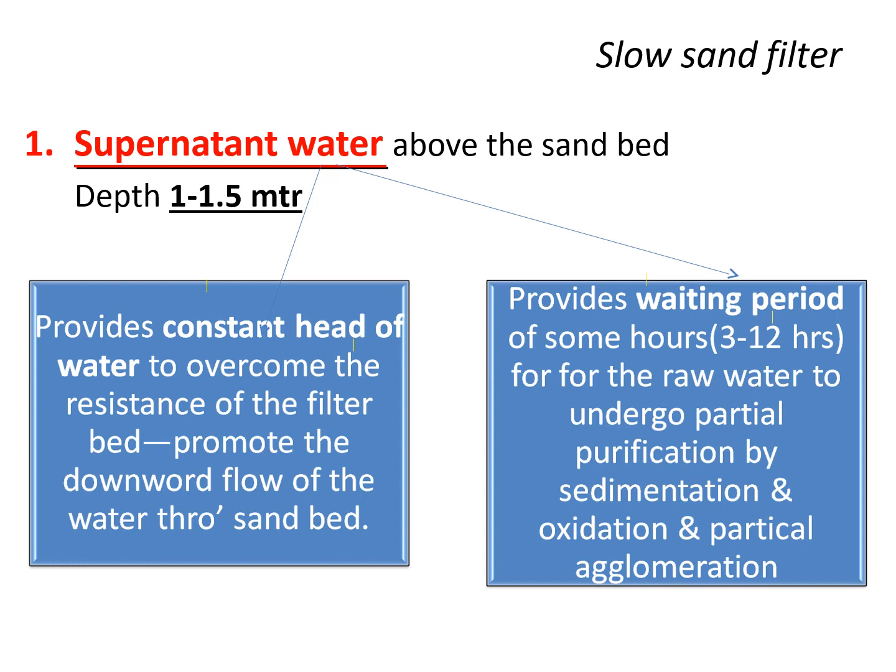The supernatant water lying above the sand bed provides a constant head of water to overcome the resistance of the filter bed, promoting downward flow of water through the sand bed. It also provides a waiting period of 3 to 12 hours for the raw water to undergo partial purification by sedimentation and oxidation. Storage alone purifies water to nearly 90 percent, so even before filtration begins, storage helps in partial purification through sedimentation and oxidation.